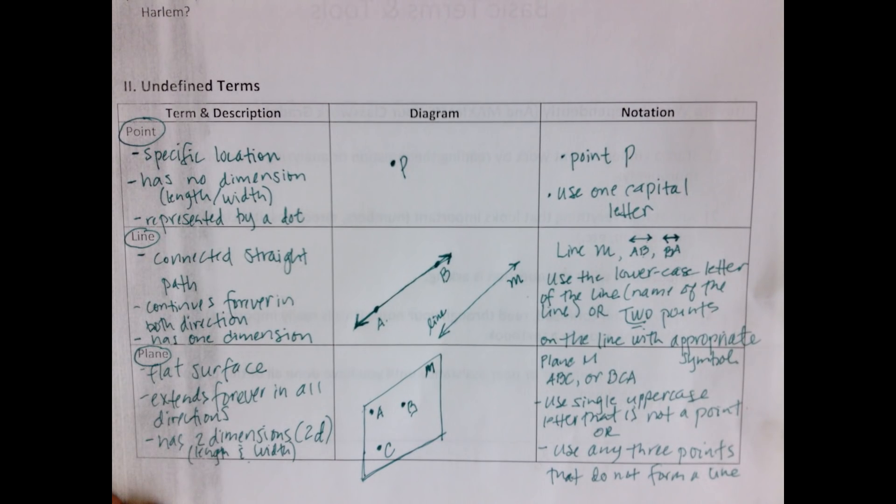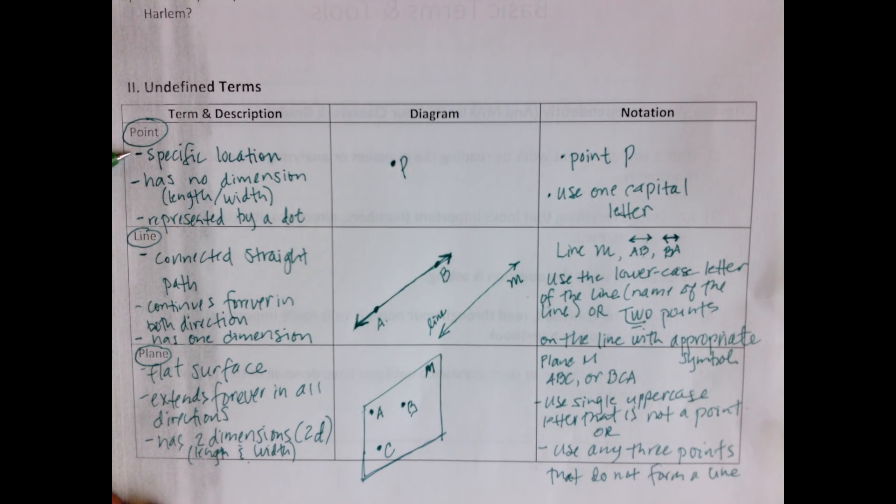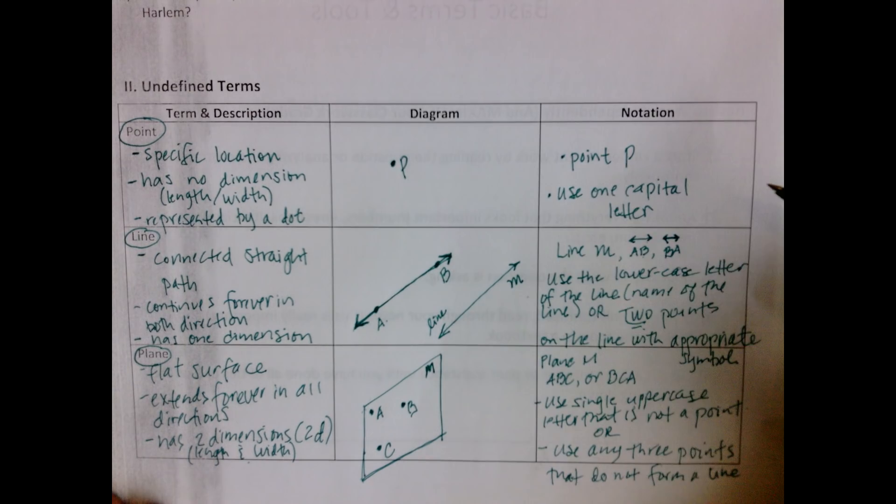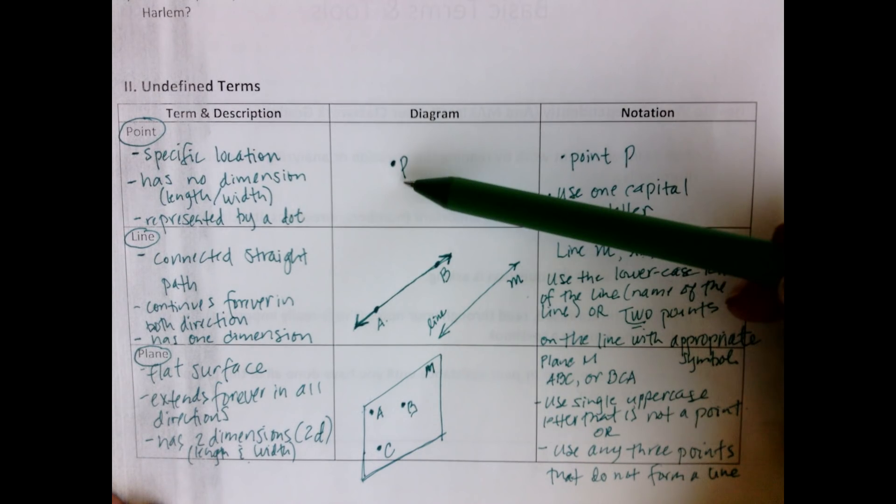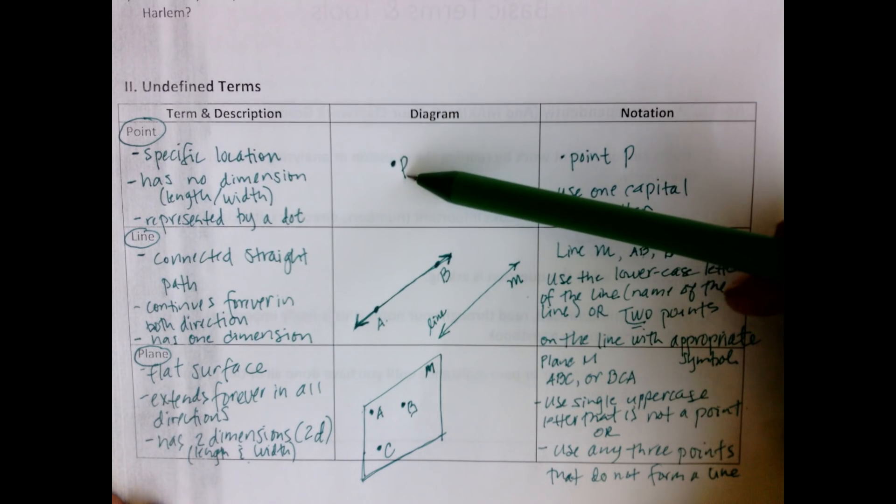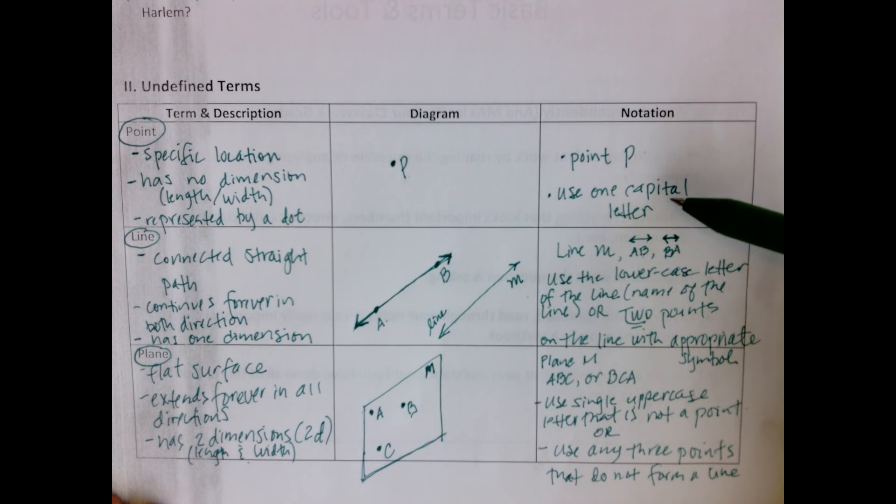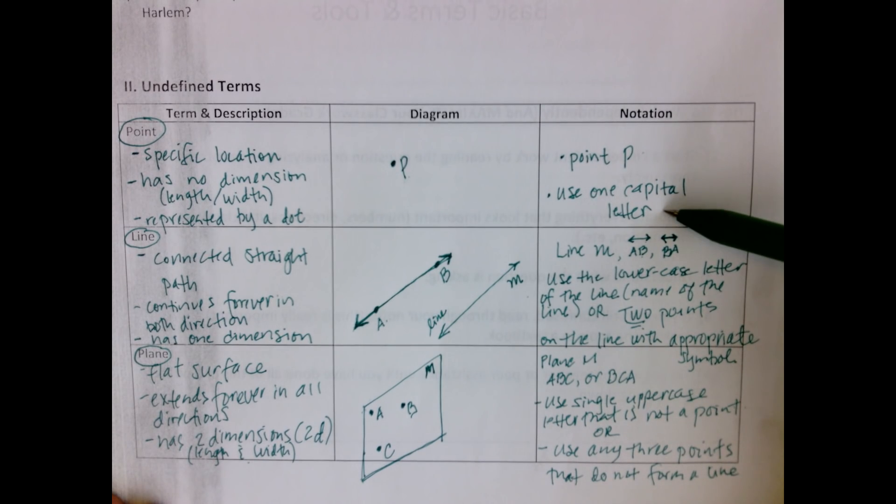Let's talk about what each of the following undefined terms are, how they look, and how we use notation to indicate them. A point represents a specific location. It has no dimension, meaning it doesn't have length or width, so it's zero-dimensional. It's represented by a dot. The diagram is just a dot with a capital letter attached to it. This is point P, and our notation is represented by writing point P. You must use one capital letter.